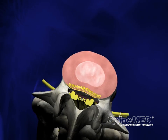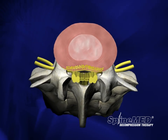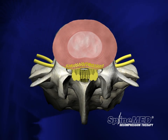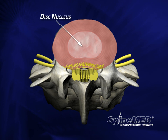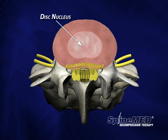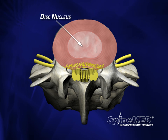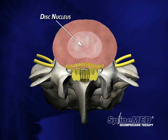Let's take a closer look at a healthy intervertebral disc, this time looking down on it from above. The pink portion represents the nucleus — this is the gel-like center of the disc, responsible for healthy disc height.